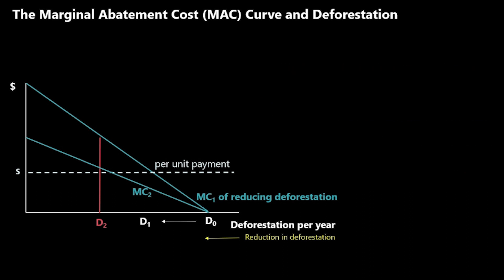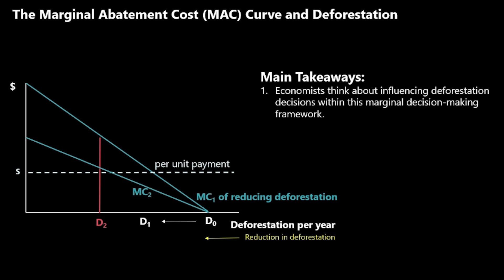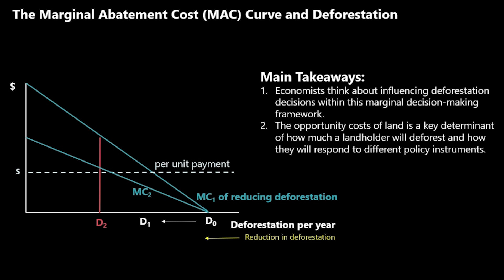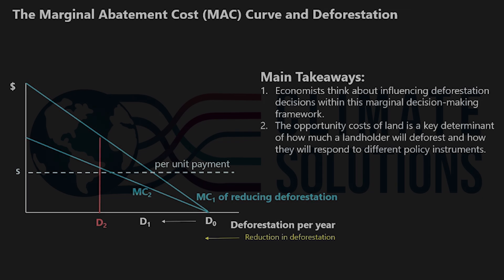There are two main takeaways. First, economists think about influencing deforestation decisions within this marginal decision framework. Second, the opportunity cost of land is a key determinant of how much a landowner will deforest and how much they will respond to different policy instruments.